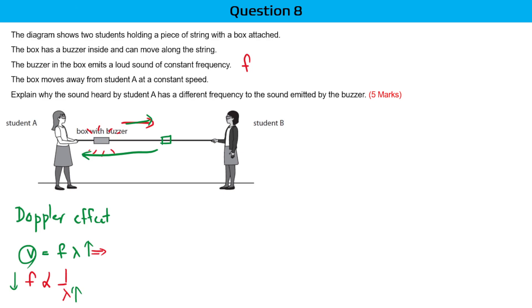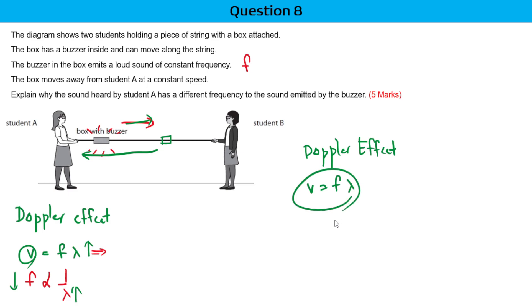That's how you can sum up five marks for your answer. Always remember when explaining the Doppler effect: for every Doppler effect problem, understand that velocity will be constant. Use V equals F lambda to explain that F is inversely proportional to wavelength — if wavelength is increasing, F is going to be decreasing. Those are the questions most often asked about the Doppler effect.